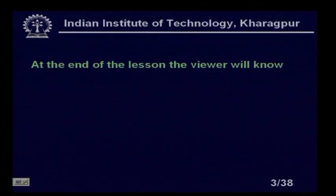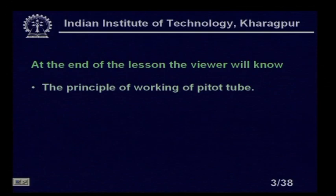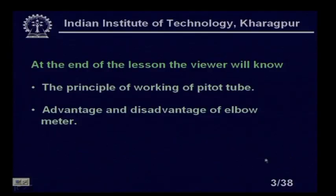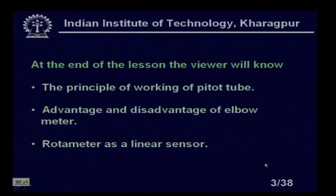At the end of this lesson, the viewer will know the principle of working of the pitot tube, the advantage and disadvantage of the elbow meter, and the working principle of the rotameter. We will also see that the rotameter can be used as a linear sensor, which is a great achievement. In most differential pressure-based flow meters, the relation between flow and differential pressure is non-linear, requiring additional circuitry to linearize. This is not necessary in the case of the rotameter, though it is used for a short range of flow measurement.